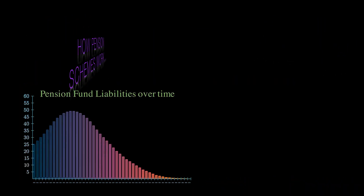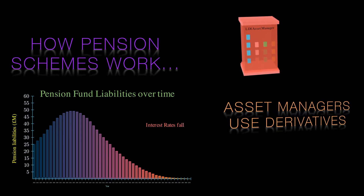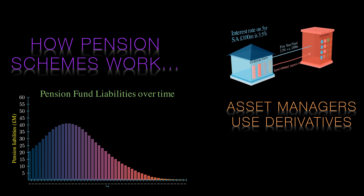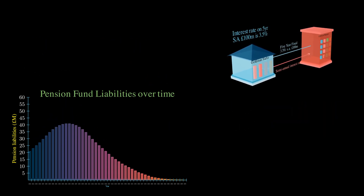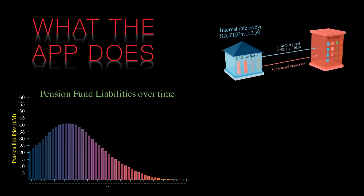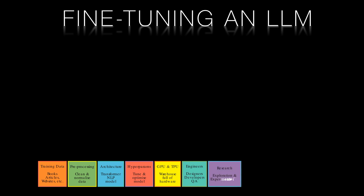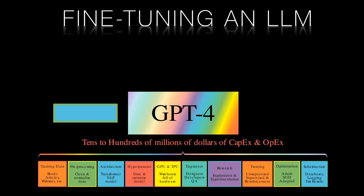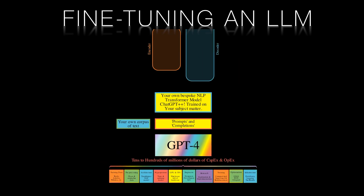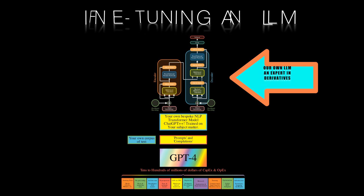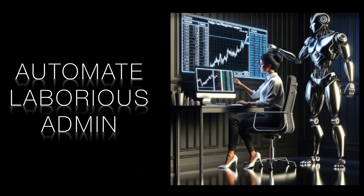We'll first spend some time looking at the intricacies of how pension schemes work and how asset managers use derivatives to hedge some of the idiosyncratic risks. While this discussion on pensions and financial derivatives will get quite technical, it is important for two reasons: firstly, to explain why our AI app does what it does, but secondly, to show the importance of fine-tuning a large language model. When we fine-tune a model, we take advantage not only of the impressive qualities of the out-of-the-box LLM, but we can turn LLMs into experts in specific areas — in this case the use of derivatives by asset managers. We'll take a very close look at how we can customise and fine-tune a large language model so that it becomes an expert in financial derivatives, and how we can reduce burdensome laborious admin for salespeople.